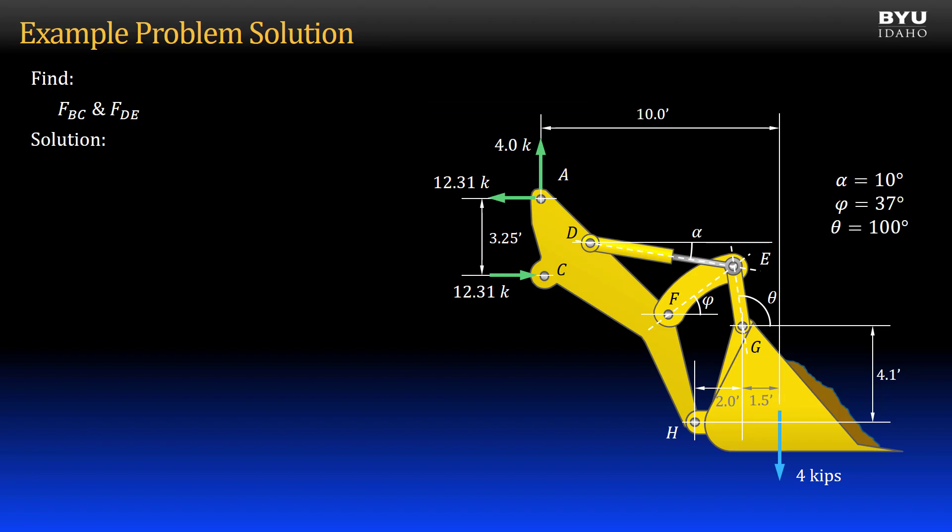The next thing I want to do is look for other two-force members in my machine. There are three more: DE, EF, and EG. I don't know the forces in any of them right now. But if I can get EF or EG, I can use the method of joints to get the force in ram DE.